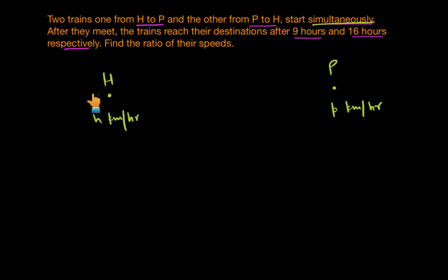Once they have started, let's say that they meet at point O. Both the trains meet at point O and then the train that started from point P. Let me use some different color to show you actually what I'm talking about. So this train that started from point P and reached O, it then moved forward towards H and it covered this distance in 16 hours.